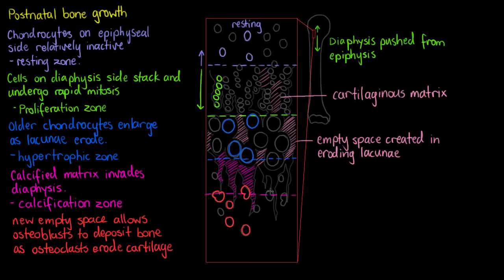And the osteoclasts will just erode and eat away at that newly deposited cartilage at the same time as the osteoblasts deposit new bone. So this area here is going to be known as our ossification zone.